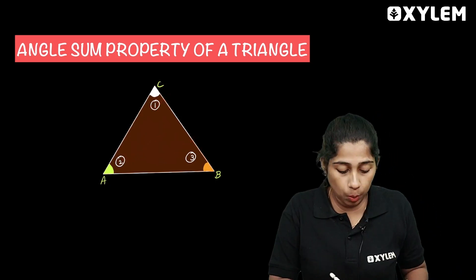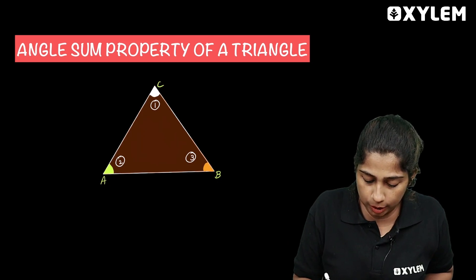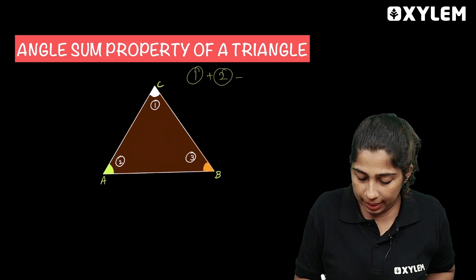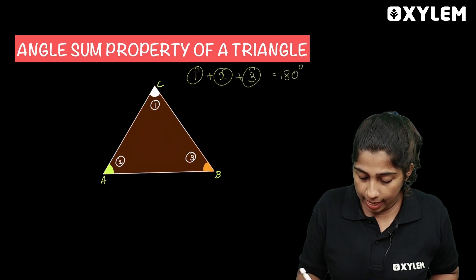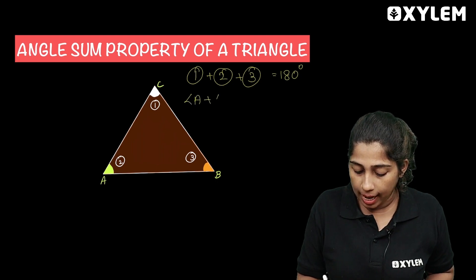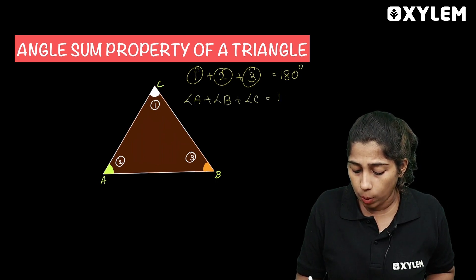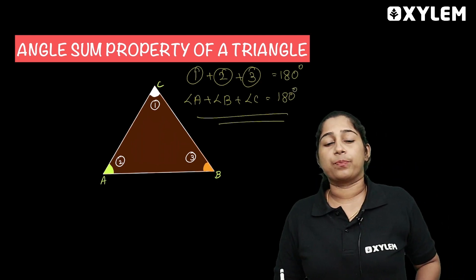Now, this Angle 1, Angle 2, Angle 3 — we will add them. Angle 1 plus Angle 2 plus Angle 3 equals 180. Angle A plus Angle B plus Angle C is equal to 180 degrees. This is the angle sum property.